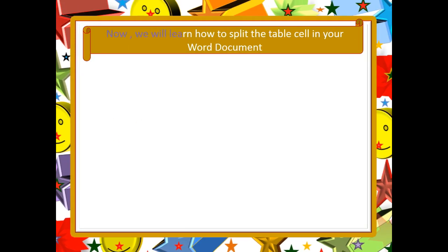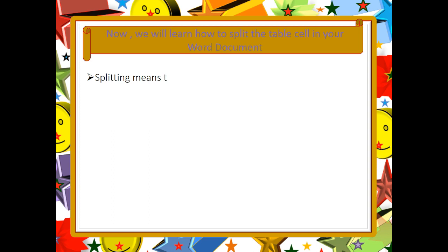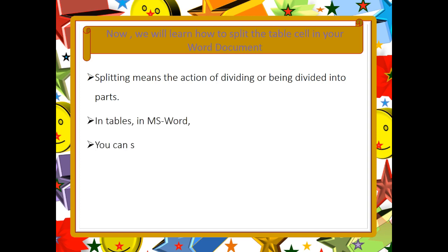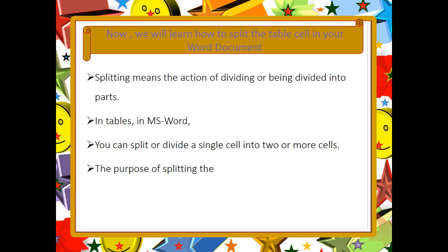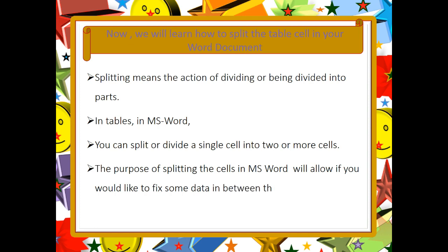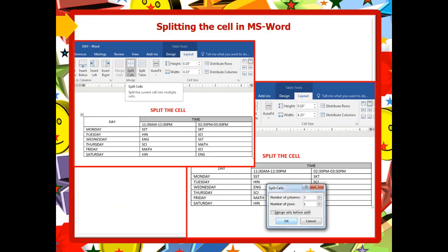Now we will learn how to split the table cell in your Word document. Splitting means the action of dividing or being divided into parts. In tables in MS Word, you can split or divide a single cell into 2 or more cells. The purpose of splitting the cells in MS Word is to allow you to fix some data in between the existing rows or columns.